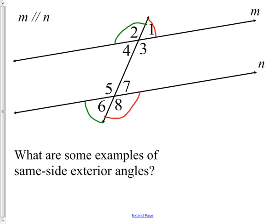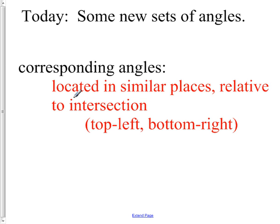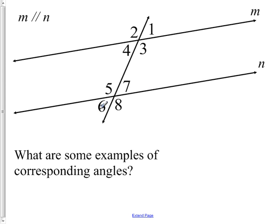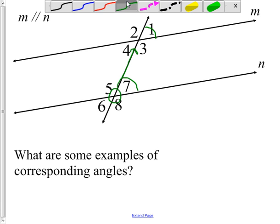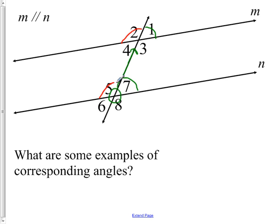The last term for today is corresponding angles. Corresponding angles are located in similar places relative to the intersection. Think of it as taking one intersection and sliding it up to the other — which numbers would match up? So angles seven and one are corresponding, two and five are corresponding, eight and three are corresponding, and four and six are corresponding. Just imagine sliding one intersection up so the parallel lines come together, and the angles that match up are corresponding angles.